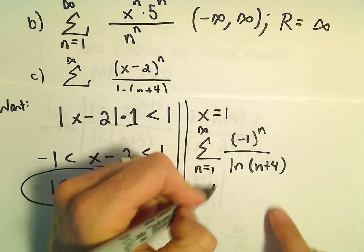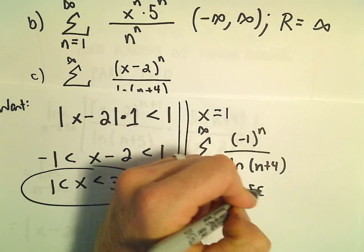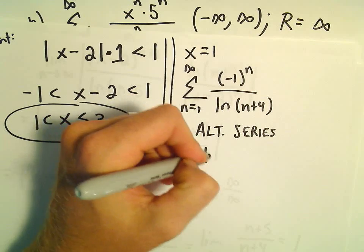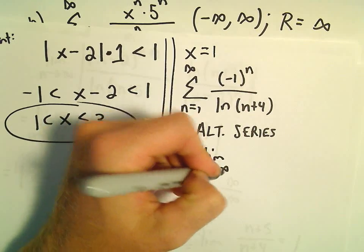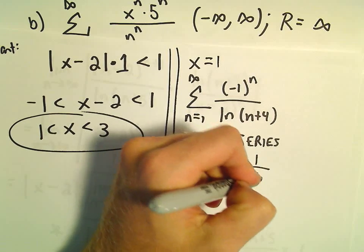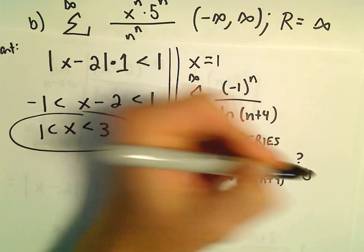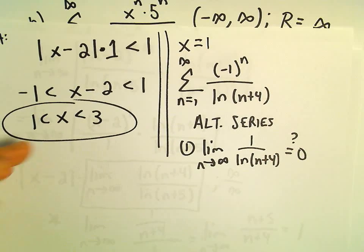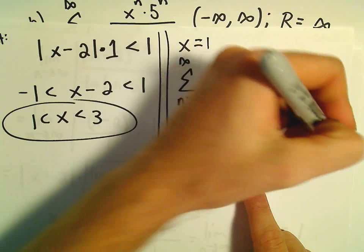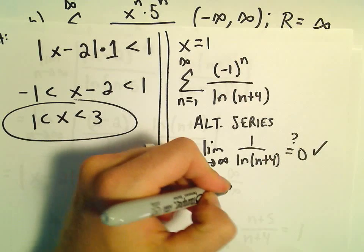We get negative 1 raised to the n power over the natural logarithm of n plus 4. So this is an alternating series. We have to check two things. If we take the limit as n goes to infinity, leaving off the alternating part, we would have 1 over the natural logarithm of n plus 4. As n goes to infinity, the natural logarithm goes to infinity, so this certainly does equal 0. The second thing is, is it decreasing?